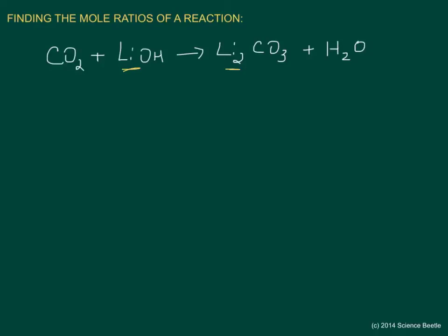To balance the reaction, we need two lithium hydroxides on the left in order to get two lithiums. That gives us two hydroxides, or two oxygens from the lithium hydroxide, plus two oxygens from the carbon dioxide — a total of four oxygens on the left. We also have four oxygens on the right, two hydrogens on both sides, and carbons are balanced. So the balanced coefficients are 1, 2, 1, 1.